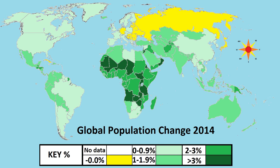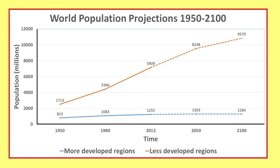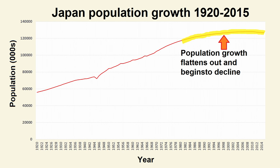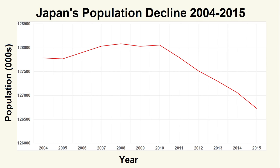At a national level, rates of population growth vary from country to country. The growth rates of less economically developed countries are very rapid compared to more economically developed countries. In fact, some countries even have negative population growth. Japan's population has experienced negative rates of natural increase since 2007 and is expected to lose 21% of its population by the year 2050.